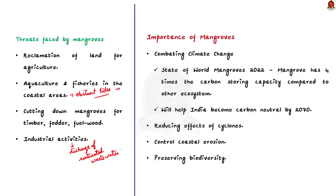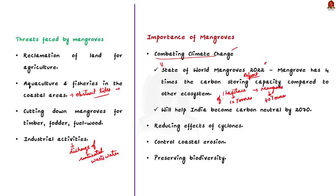The importance of mangroves prompted the government to act. Firstly, mangroves play a major role in combating climate change. According to the State of World Mangroves 2022 report, mangroves hold up to four times the amount of carbon as some other ecosystems of similar size. For example, if one hectare of a terrestrial forest holds up to 10 tons of carbon, a mangrove of the same size holds up to 40 tons. Mangroves are one of the world's most efficient carbon sinks.